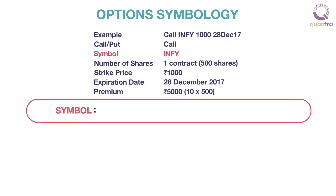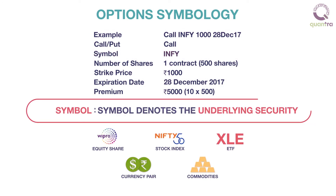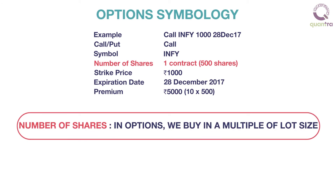Symbol denotes the underlying security. In options, we buy in a multiple of lot size. For example, the lot size of Nifty 50 is 75, so we can buy only in multiples of 75, such as 75, 150, 225, and so on. The lot size is set for each option contract, and it may differ from underlying to underlying.